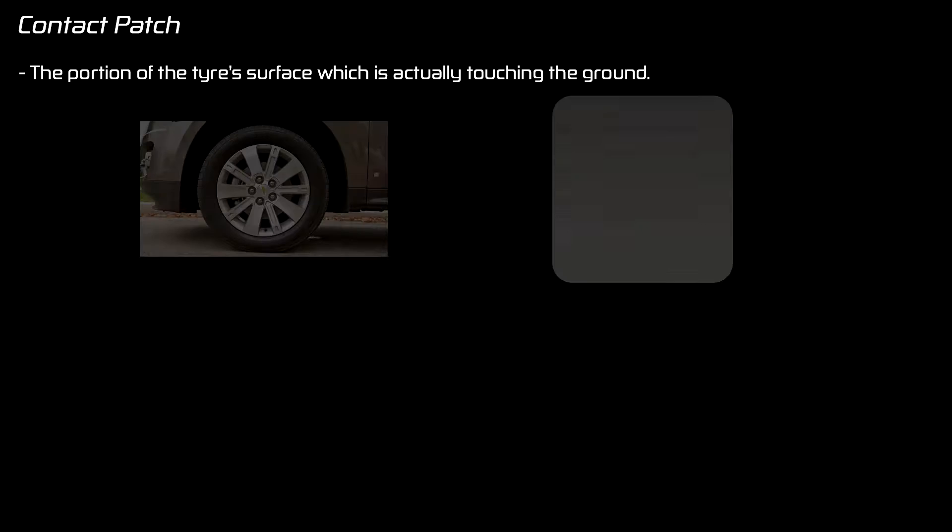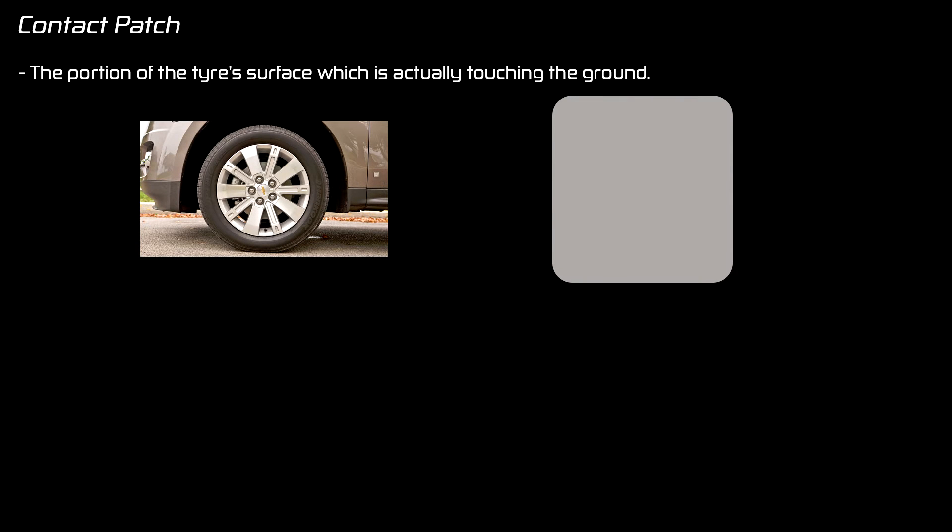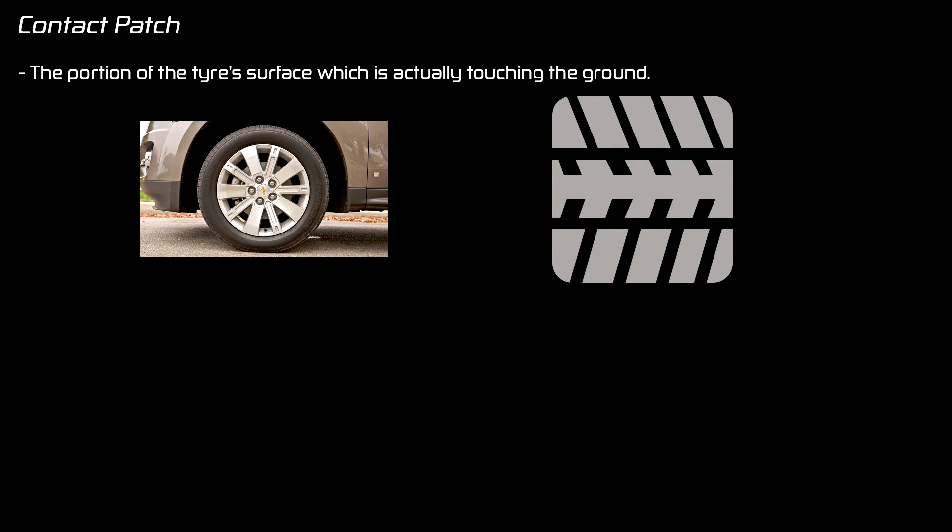The first concept I want to talk about is the contact patch. The contact patch is the portion of the tire's surface which is actually touching the road. Here's a picture of my car's tire and here's my attempt at illustrating its contact patch. You can see that the contact patch will be a square-ish shape. I also have to take into account that this tire has grooves, so the contact patch will actually look something like this.